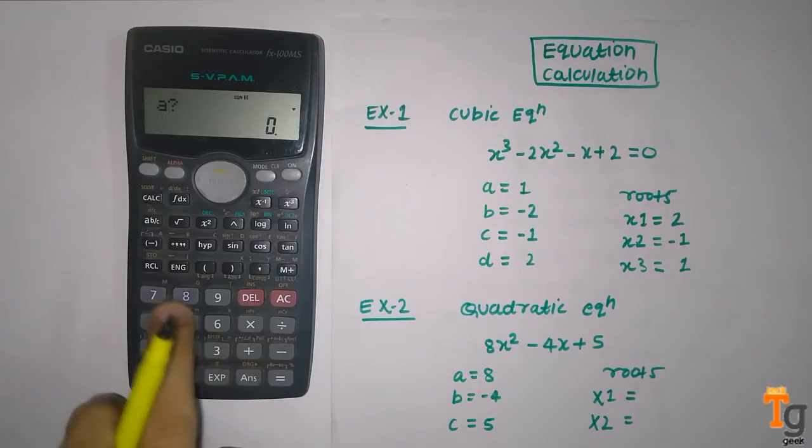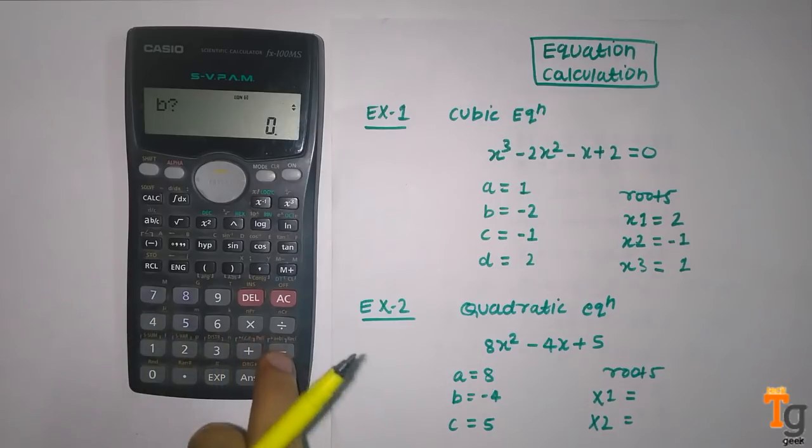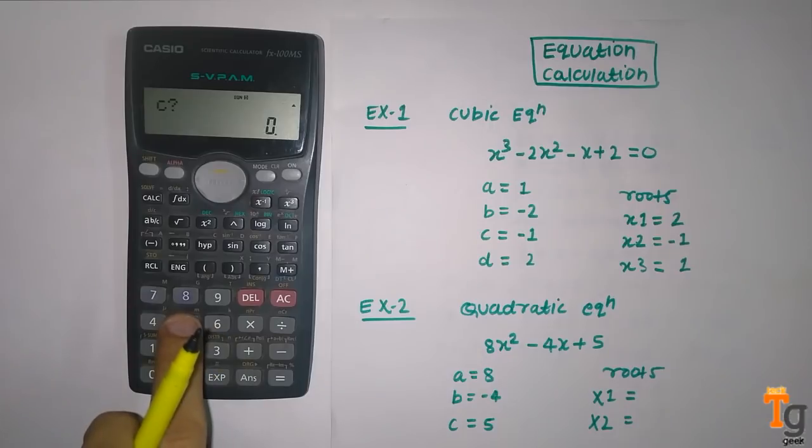The value of b is minus 4, minus 4. And the value of c is 5. Now these are the value roots of your equation, but these are only real roots of your equation.